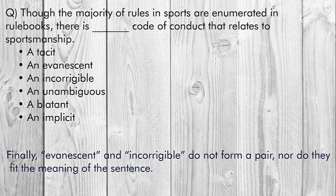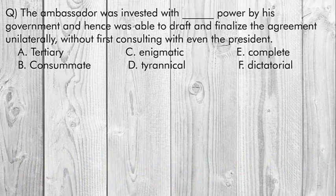Now friends, let's move to another question. The ambassador was invested with a dash power by his government, and hence was able to draft and finalize the agreement unilaterally, without first consulting even the president. Options are: tertiary, consummate, enigmatic, tyrannical, complete, and dictatorial.